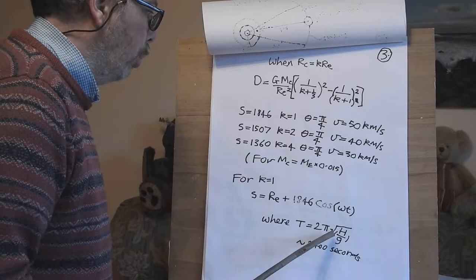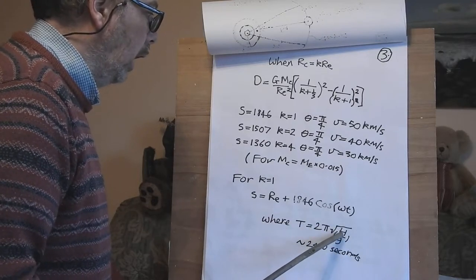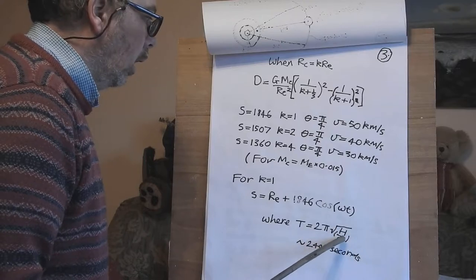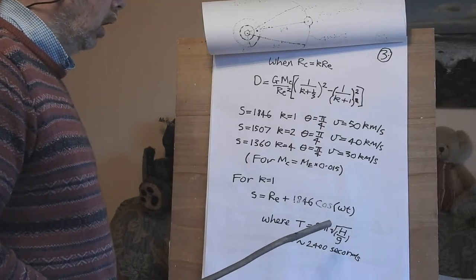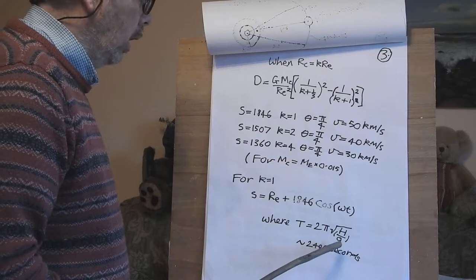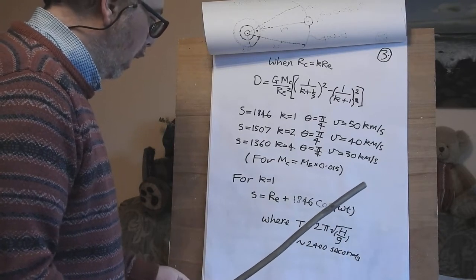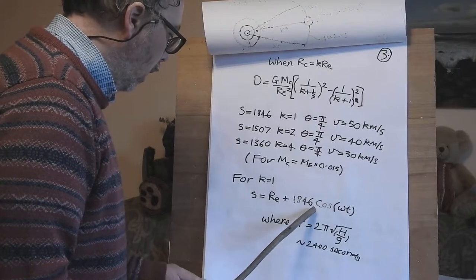The period of the motion is 2 pi root h over g where h is the depth of the mantle and g is the acceleration due to gravity of the surface of the Earth.